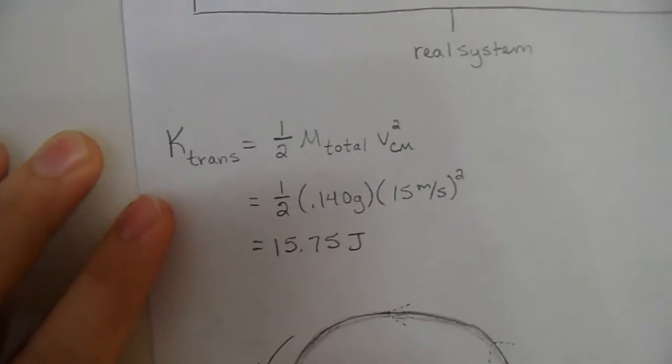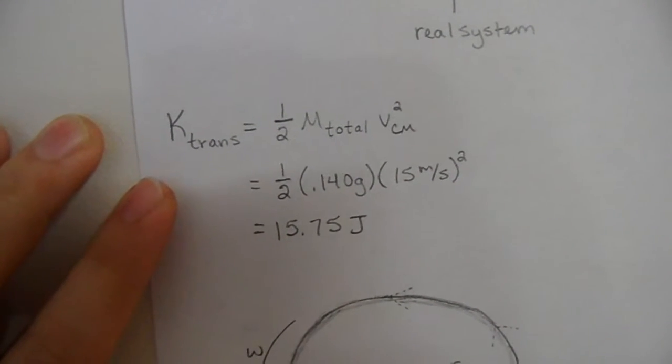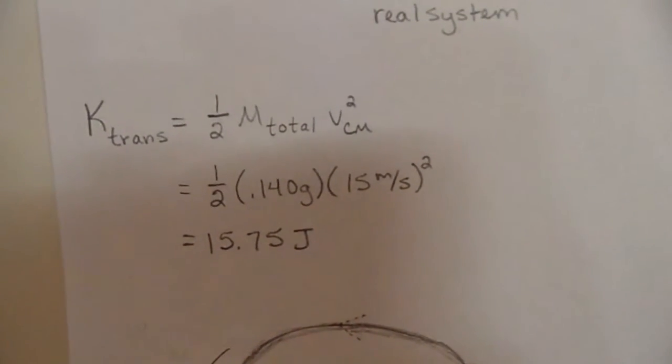It's just a simple plug and chug. It's one half times the total mass times the velocity of the center of mass. More on that idea later.